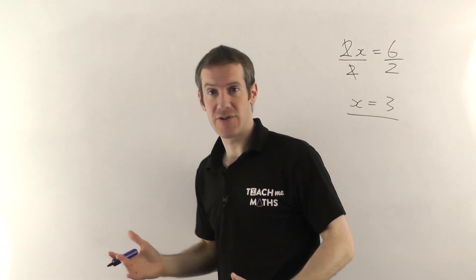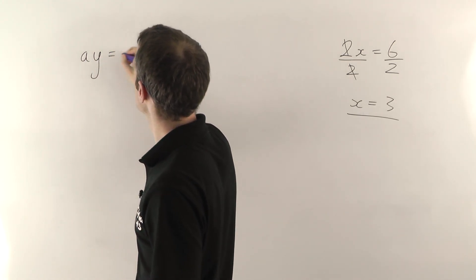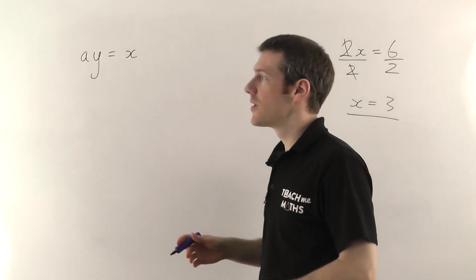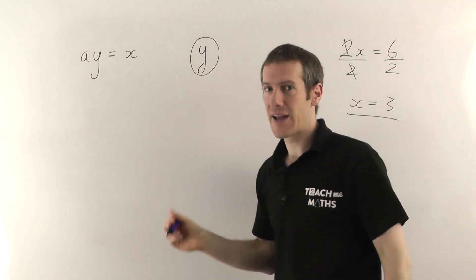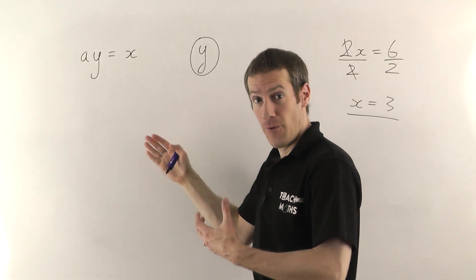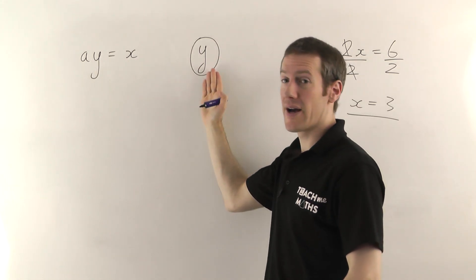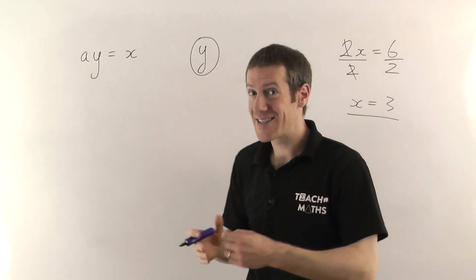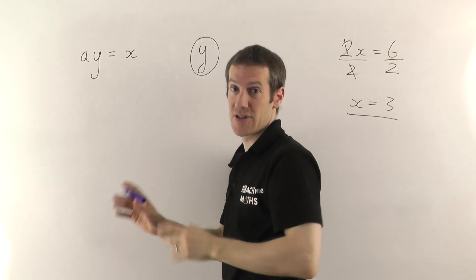Let me give you an equivalent example for transposition. If we have ay equals x, and the question tells you that you want to get y by itself — I'll put that in a circle so I don't forget. Often the question will say 'transpose ay equals x for y,' meaning you want to get y by itself. The y is the letter we care about; you want to put everything else on the other side and leave y by itself on one side of the equation.